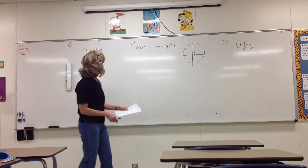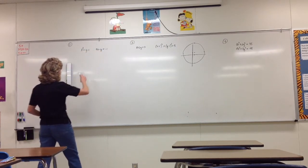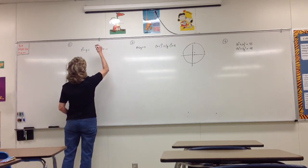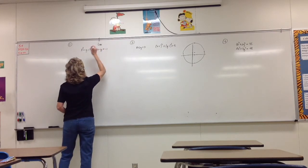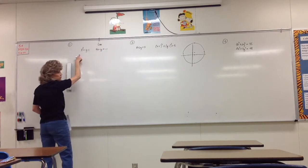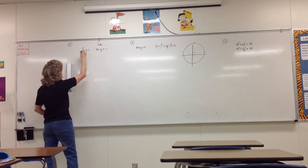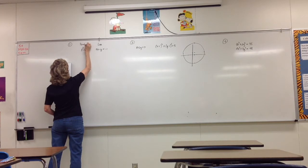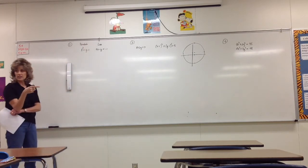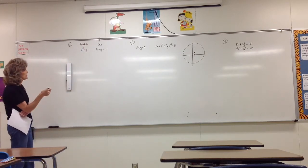On this one, we just have one quadratic equation. When you look at this, I hope you recognize this one is a line. And this one, when we only have one squared variable, is a parabola. So what we're really trying to figure out is where does this line and this parabola intersect?